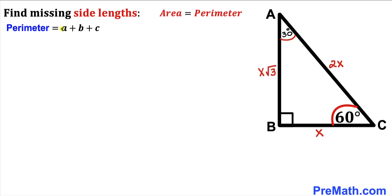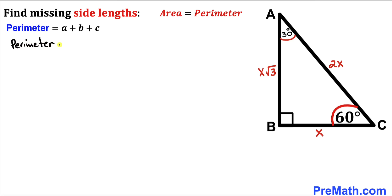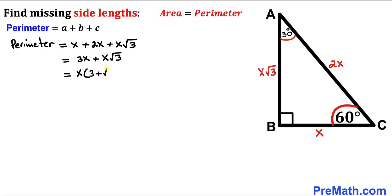Now let's recall the perimeter formula: perimeter equals the sum of all side lengths. The perimeter of triangle ABC equals x plus 2x plus x times square root of 3. Factoring out x, this becomes x times (3 plus square root of 3). This is equation number 1.